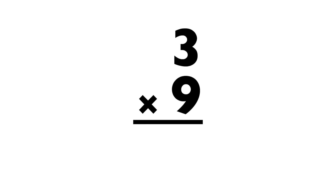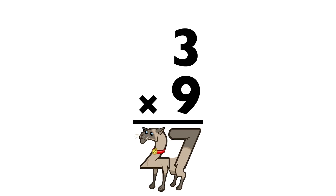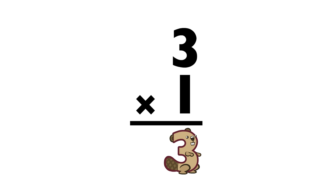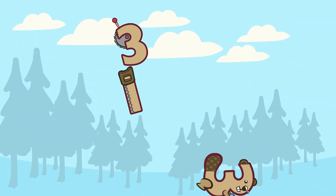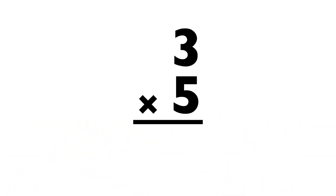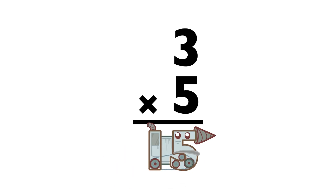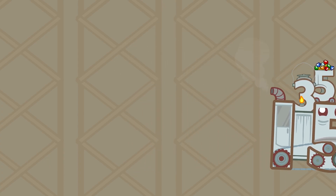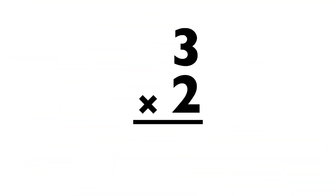Three times nine equals — twenty-seven. Three times one equals — three. Three times five equals — fifteen. Three times two equals — six.